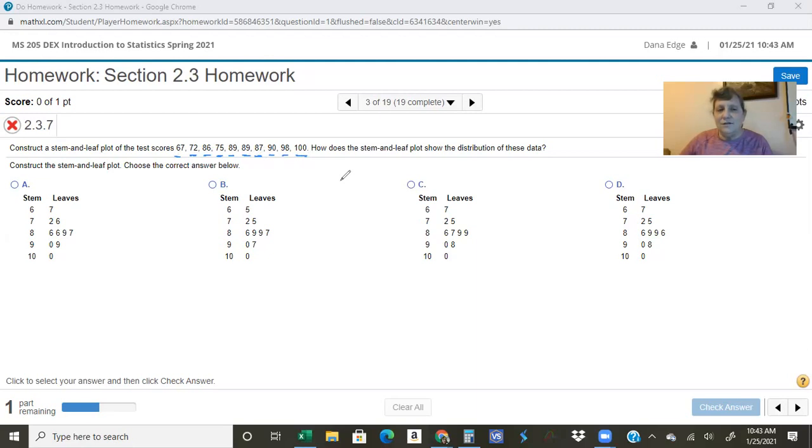When you construct a stem and leaf plot you have to put the first digit in the first column, and in this case you'll notice that they're putting everything in the tens place. So this would actually be a 10 with a zero because this obviously has to come after the 80s and 90s.